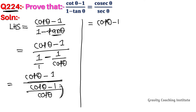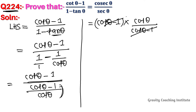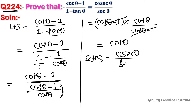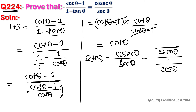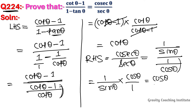So cot theta minus 1 into cot theta by cot theta minus 1 — the (cot theta minus 1) will cancel, giving equal to cot theta. Our RHS is cosec theta by sec theta. Cosec theta is 1 by sin theta and sec theta is 1 by cos theta, so equal to 1 by sin theta into cos theta by 1, which equals cos theta by sin theta, equal to cot theta.